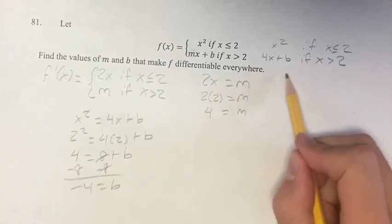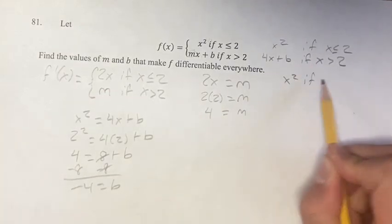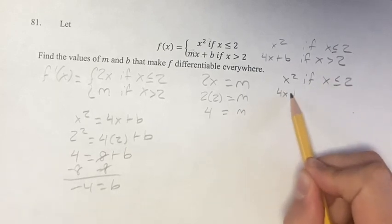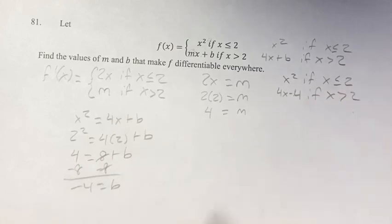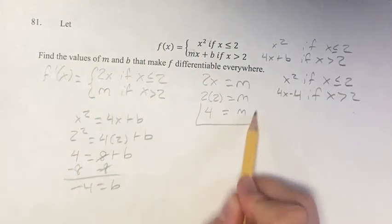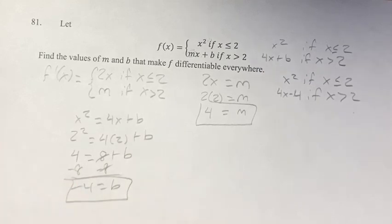Therefore, this is equal to x squared if x is less than or equal to 2, and 4x minus 4 if x is greater than 2. The problem is asking us to find our values of m and b, which are 4 for m and negative 4 for b.